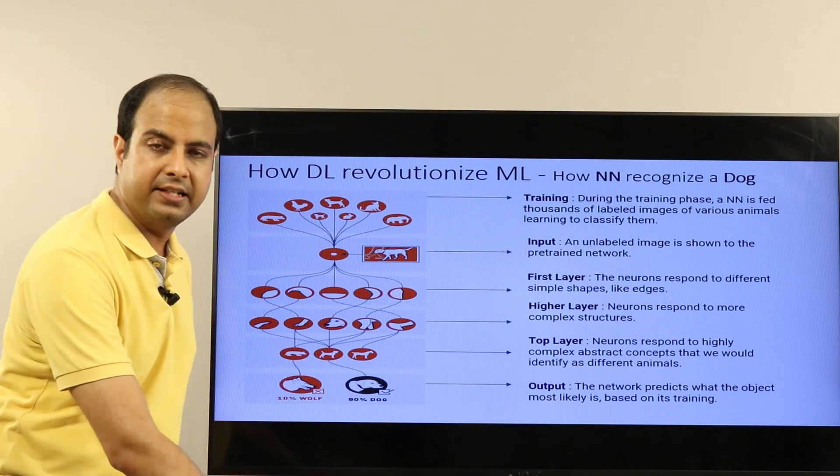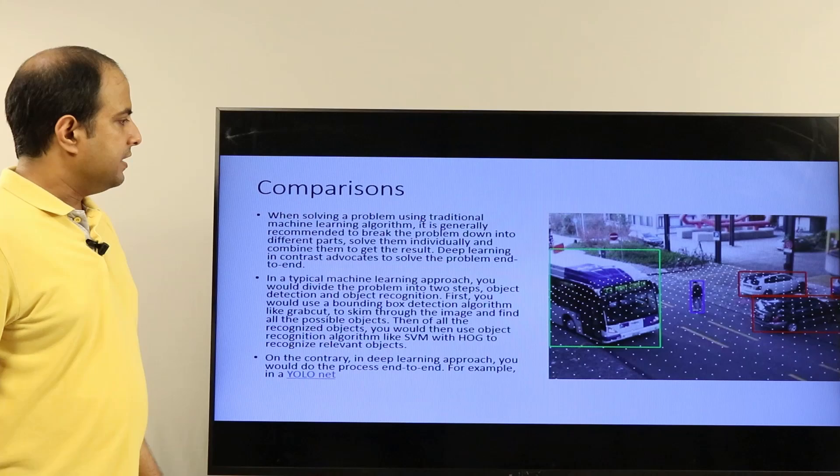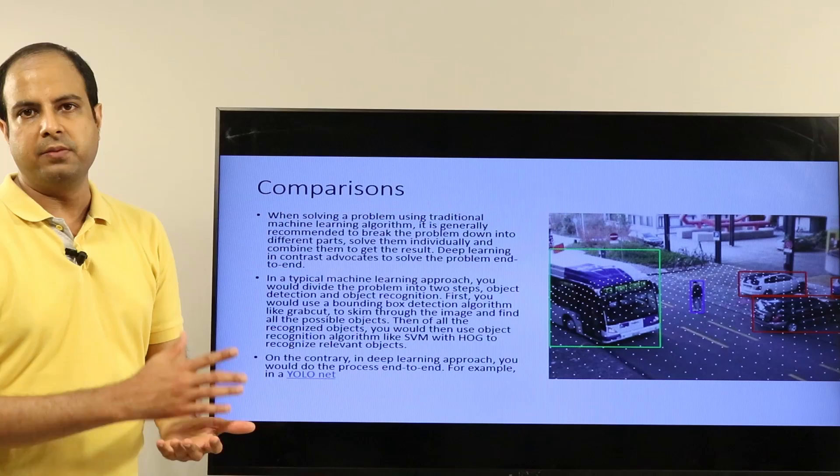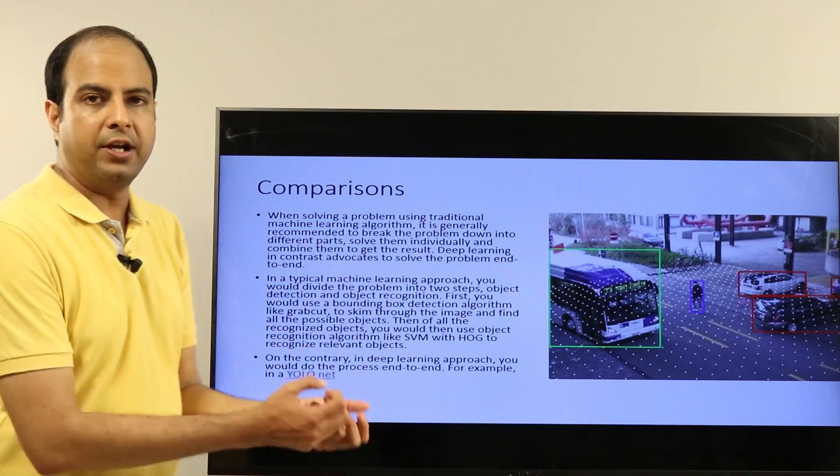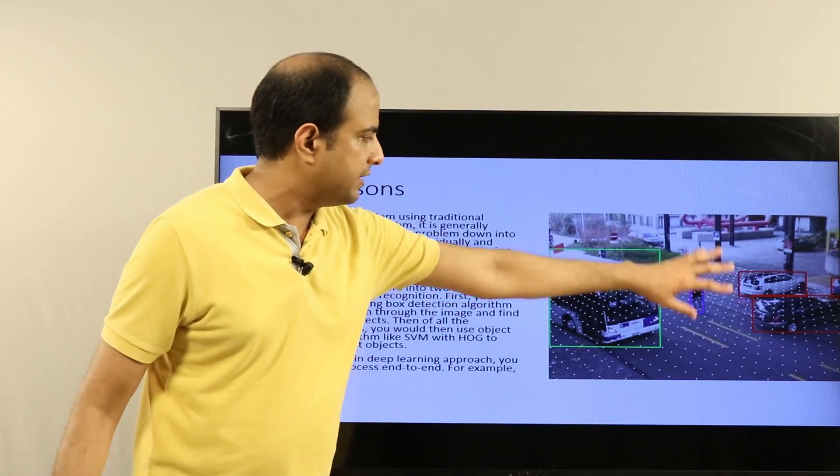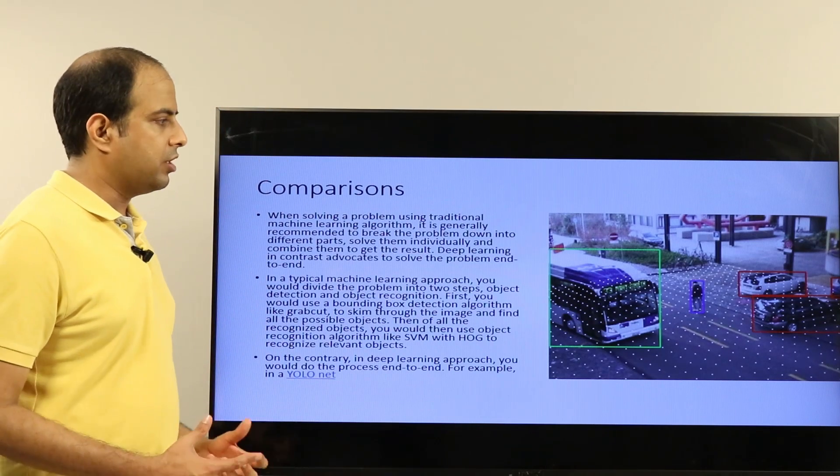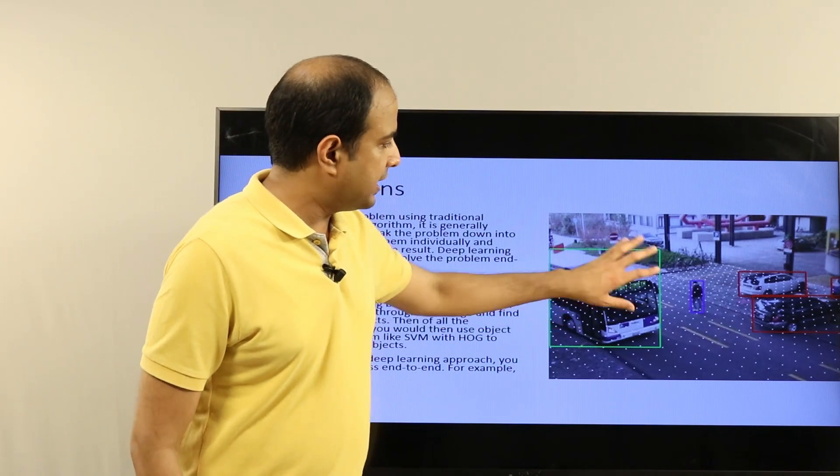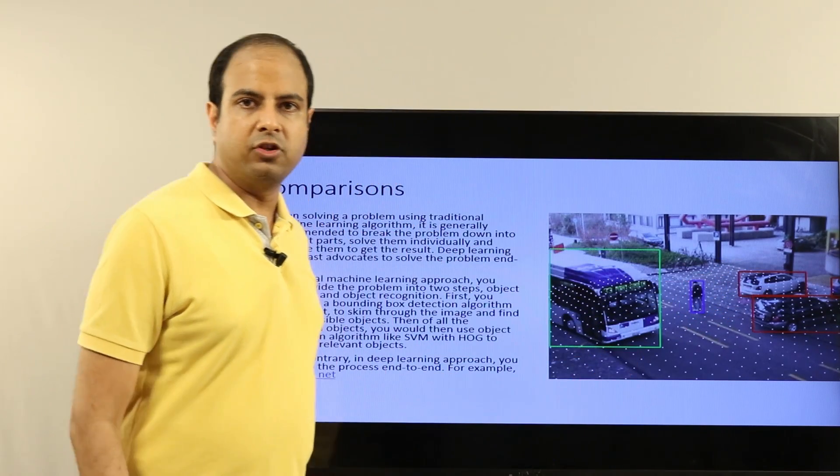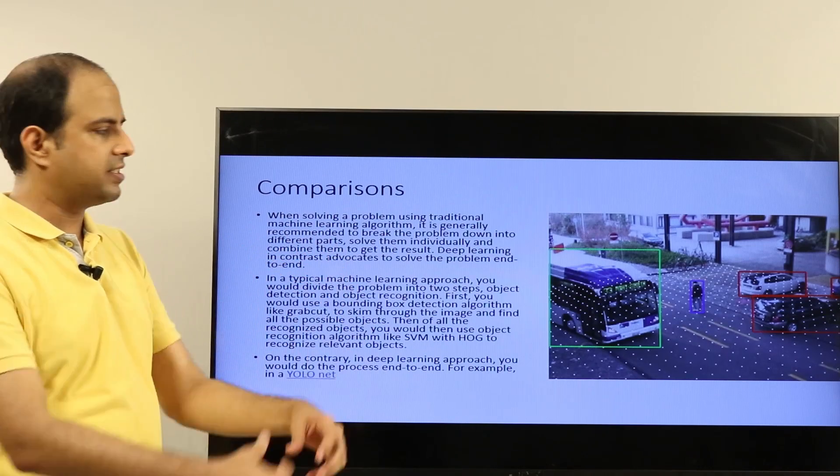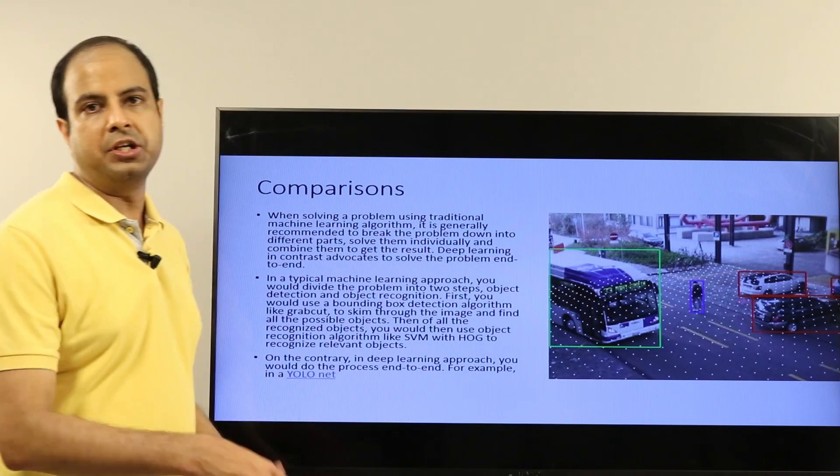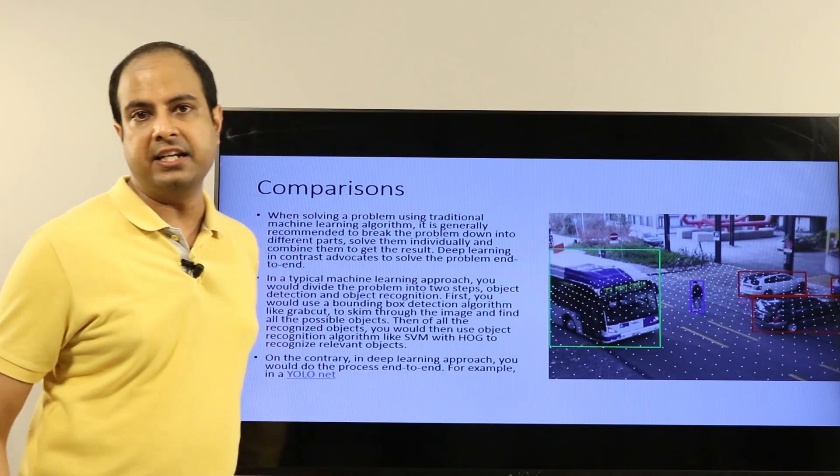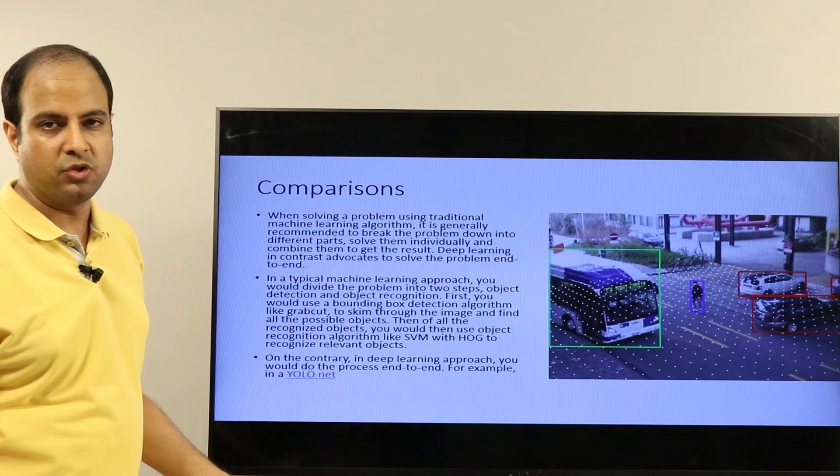While solving a problem using traditional machine learning algorithms, it is generally recommended that you break the problem into multiple pieces and solve one by one. For example, if you were given an image and the problem was to recognize various objects in it, you would solve it in two steps in the machine learning way. You would first figure out the bounding boxes of each of those objects, and then for each of those bounding boxes you would classify them into various different objects. So first do bounding box detection and then do object recognition—what particular object exactly is present in it.